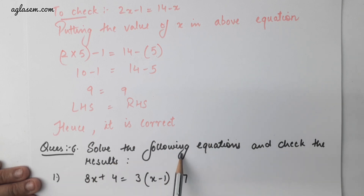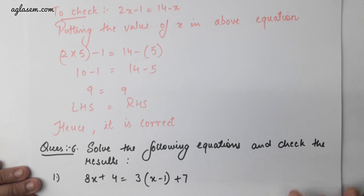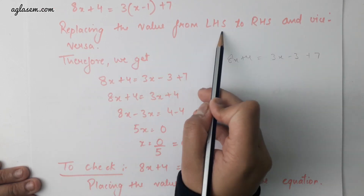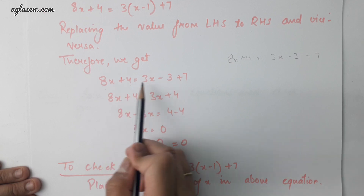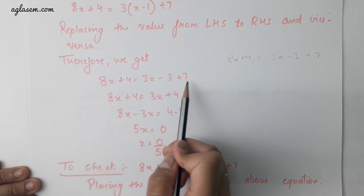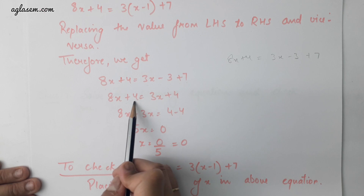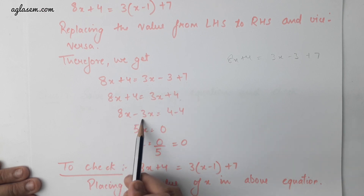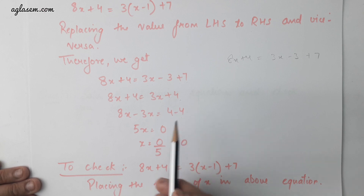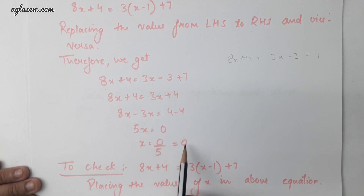Question number 6: solve the following equations and check the result. 8x plus 4 equals to 3 multiplied by x minus 1 plus 7. Expanding the RHS, we get 8x plus 4 equals to 3x minus 3 plus 7, which simplifies to 8x plus 4 is equal to 3x plus 4. So 8x minus 3x is equal to 4 minus 4, giving x is equal to 0.